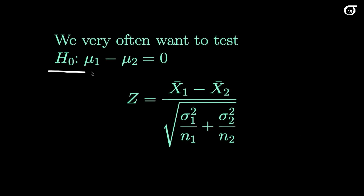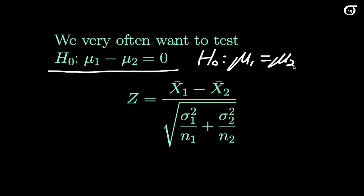Very often we want to carry out a hypothesis test that the difference in population means equals zero, or equivalently that the population means are equal. This is the question of interest very frequently in the real world. The test statistic should look quite familiar: take the estimator of that quantity, subtract the hypothesized value — which is zero, so we can drop it — and divide by the standard deviation of the sampling distribution of the estimator. It's the same logic as one-sample problems.